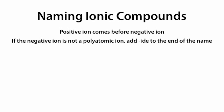For example, NaCl. NaCl is composed from Na+ and Cl-. Na is sodium and Cl is chlorine. Na+ is the positive ion, so we put that first. The negative ion is not a polyatomic ion, so we add -IDE to the end of the name, going from chlorine to chloride. All together, NaCl is called sodium chloride.